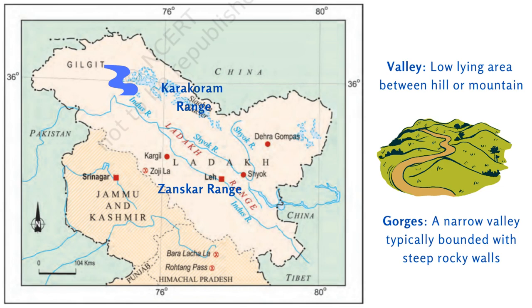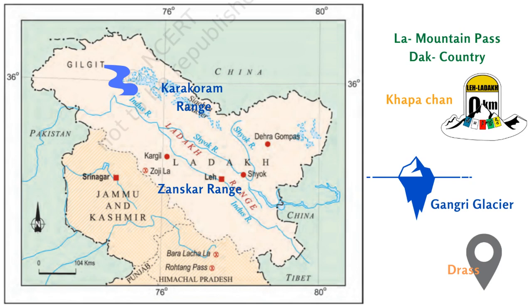Next we look at Ladakh — a cold desert lying in the greater Himalayas on the eastern side of Jammu and Kashmir. It is enclosed by the Karakoram Range in the north and the Zanskar Range in the south, and has several rivers including the River Indus, which originates in the Tibetan Plateau. The rivers have many deep valleys and gorges. The name Ladakh comes from two words: 'La' meaning mountain pass and 'Dak' meaning country. It is also called 'Kapachan,' which means snowland.